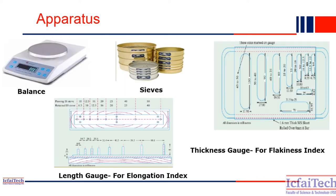In this experiment we will use four types of equipment. First is a balance which can measure up to 30 kg weight of aggregate. Then we'll use sieves with different dimensions, starting from 30 mm to 6.3 mm. We also have the apparatus for measuring the flakiness index, and another apparatus used for finding the elongation index.